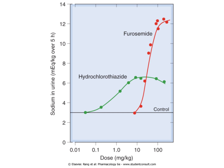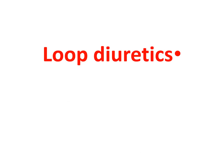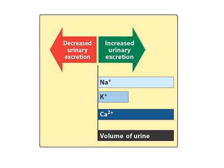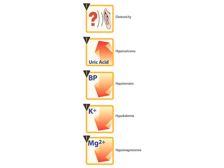Loop diuretics are dose-dependent or concentration-dependent drugs. Their mechanism of action on urinary electrolyte concentration, compared to thiazides, shows they cause increased urinary excretion of calcium, sodium, and potassium, but with a more potent diuretic effect producing greater urine volume. The adverse reactions of loop diuretics include ototoxicity, hyperuricemia, hypotension, hypokalemia, and hypomagnesemia.